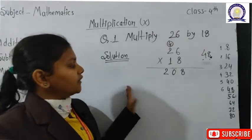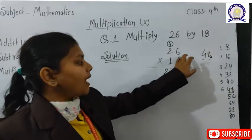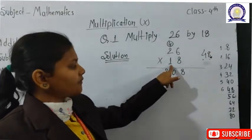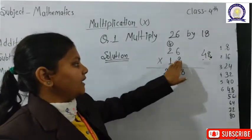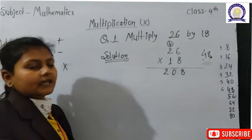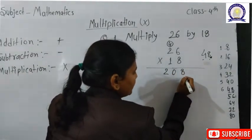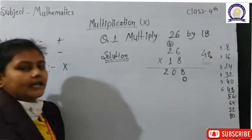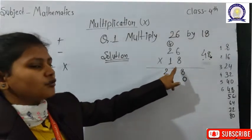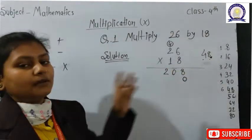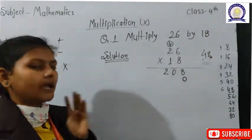After this we read the 8 times table 2 times: 8×2=16. So 16. How much carry do we have? 4. So 16 plus 4 equals 20. We find 20 in the box.